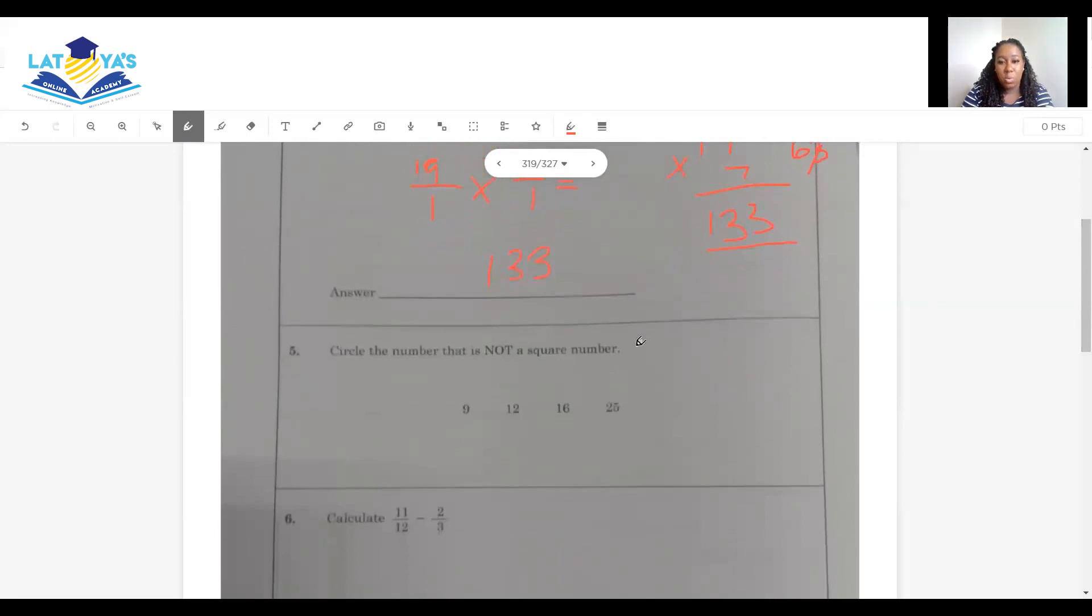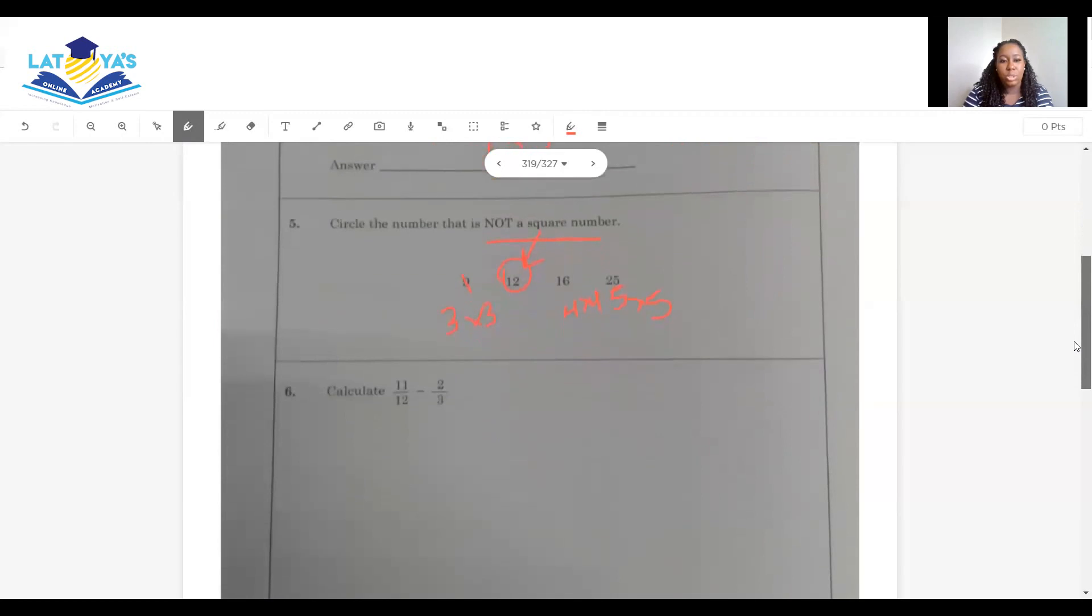Circle the number that is not a square number. 9 is a square number. How do I know that? 3 times 3 is 9. 12 is a square number? Nope. So 12 is the answer. 16 is a square number? Yes. How do I know that? 4 times 4 is 16. 25 is a square number. How do I know that? 5 times 5 is 25. So my answer is 12. 12 is not a square number.